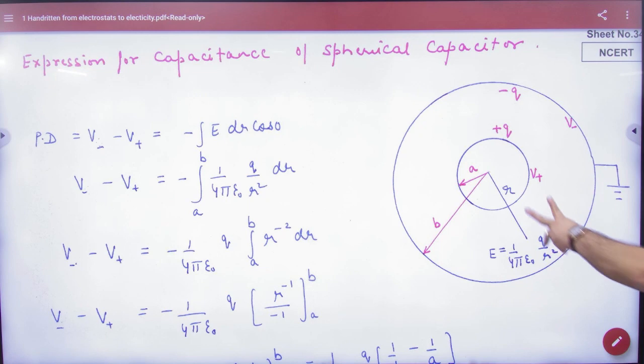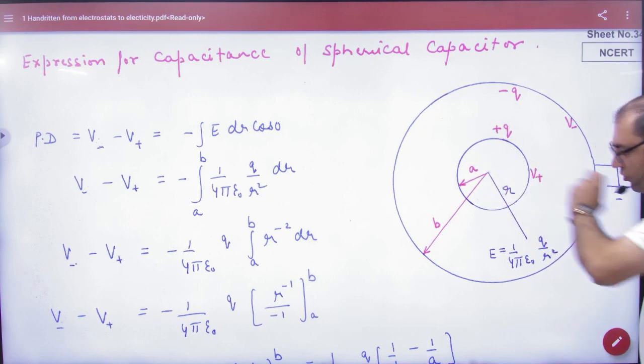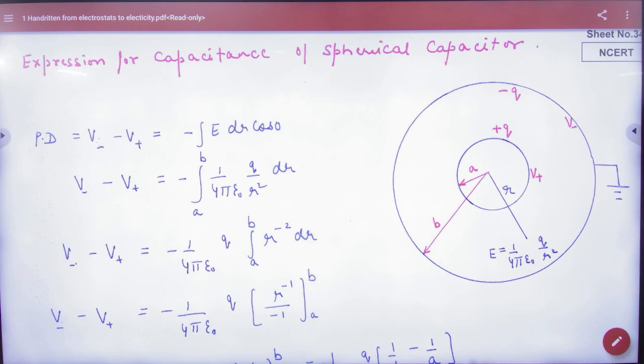So in this, positive charge gives positive potential, negative charge gives negative potential. At any distance, the E formula - what will be the inner shell E? 1 by 4 pi epsilon naught Q by r square. The outer shell doesn't contribute because the point is inside it.